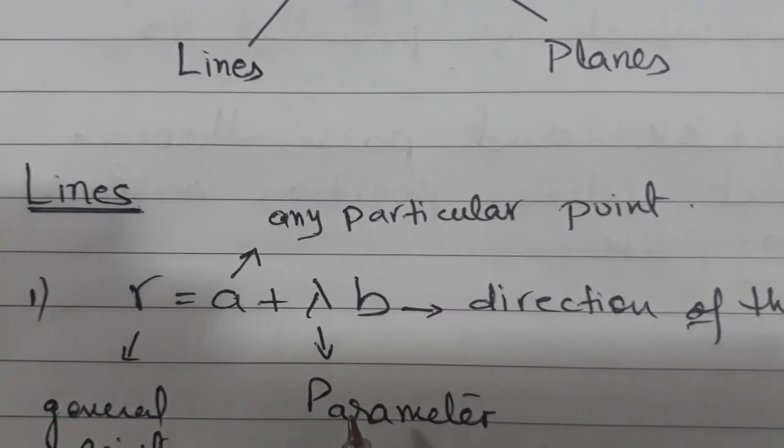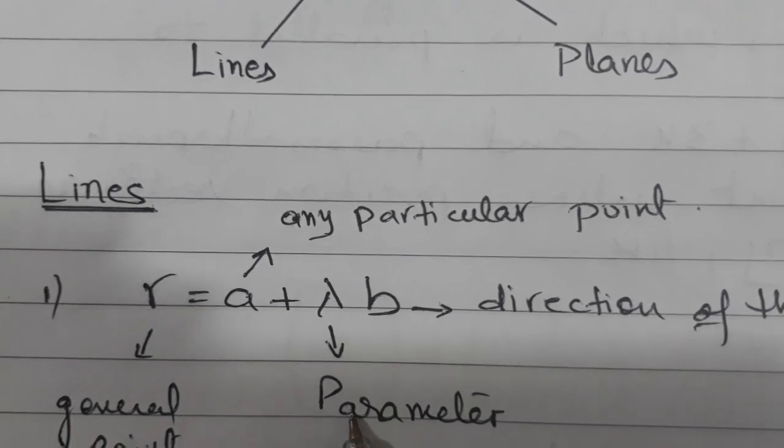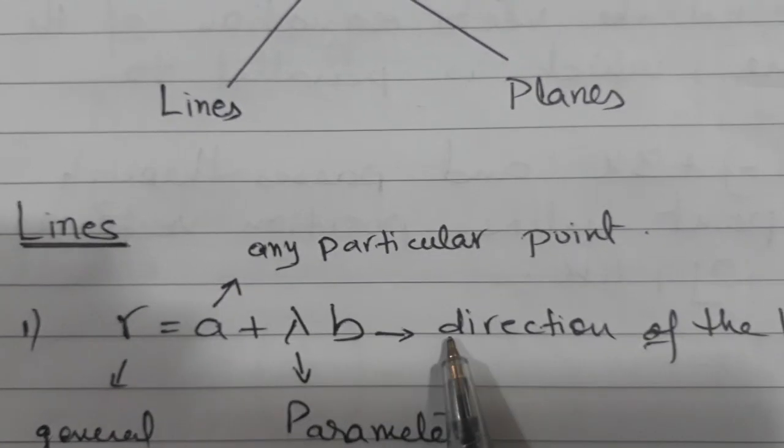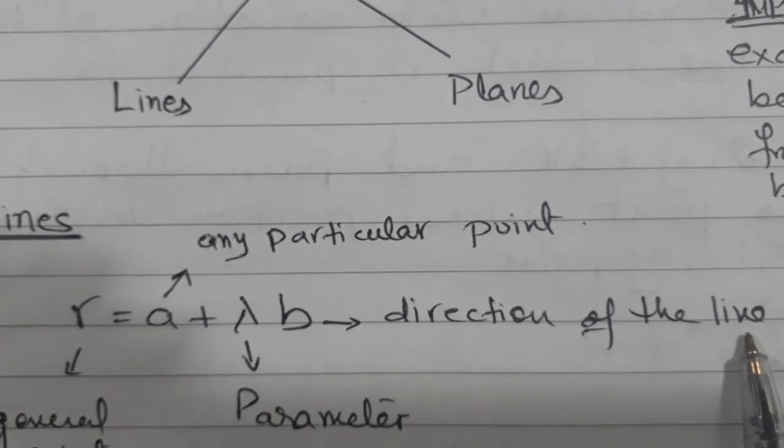lambda is a parameter. It means this value helps you to find out the position of any point on the line and b is the direction of the line.